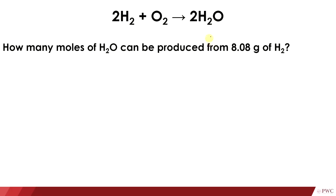How many moles of H₂O can be produced from 8.08 grams of H₂? So the given is 8.08 grams of H₂. Here it's different from the previous one, because instead of moles we're given grams of H₂. So first, we need to convert the mass into moles of H₂, and then from moles of H₂ we can find the moles of H₂O produced from this reaction.